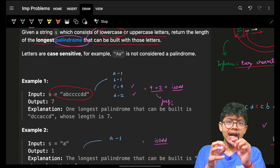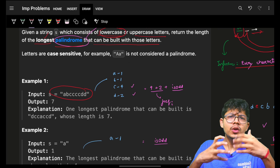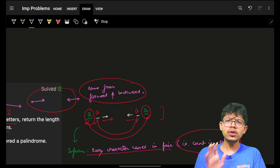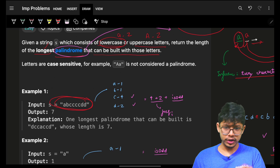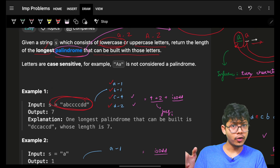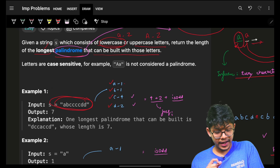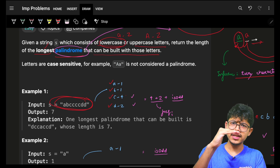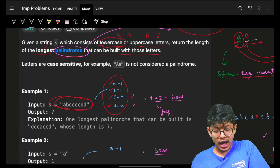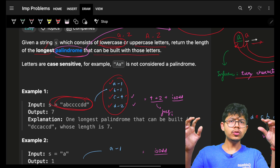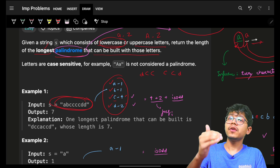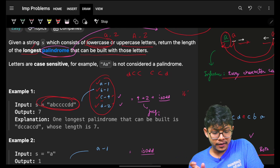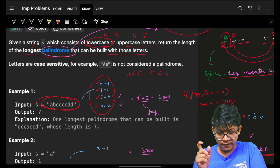We first grab the frequency of all the elements. For example, with characters a, b, c, d having frequencies 1, 1, 4, 2 — simple iteration to grab frequencies. We know all even-frequency elements can occur in a palindrome as pairs: 'dd', 'cccc'. So if the frequency mod 2 equals 0, just add the frequency directly to your answer — add 4 and 2 as they are.